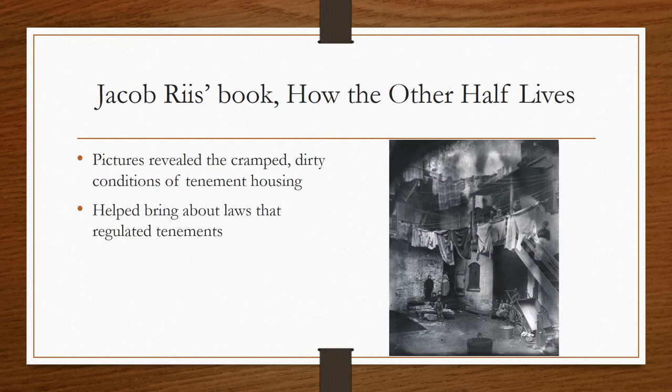Jacob Riis, which we went over in a PowerPoint yesterday — his book, How the Other Half Lived, was a very strong example of progressive reform. His pictures revealed the cramped, dirty conditions of tenement housing. Eventually, this helped bring about laws that regulated tenements and made sure that they were spaced further apart and that they had at least one toilet per 20 people.